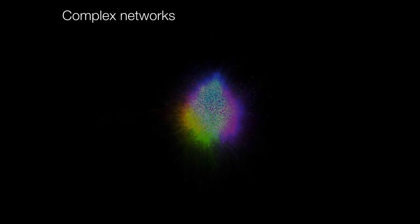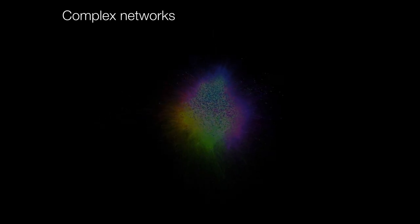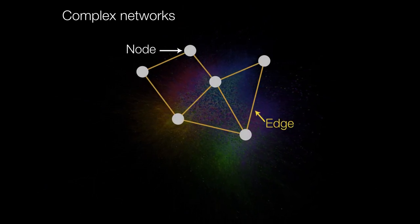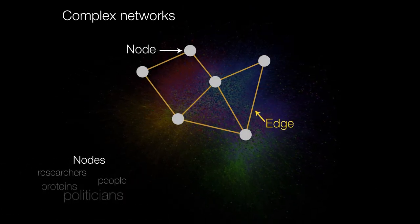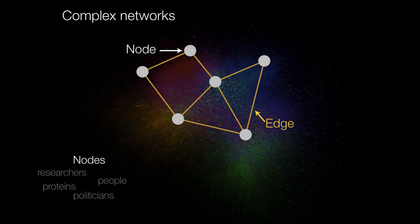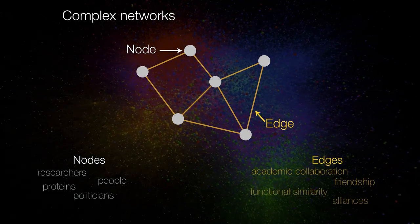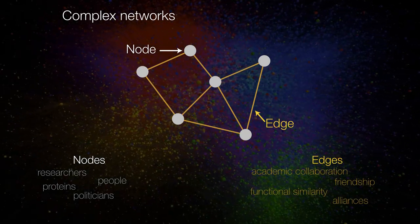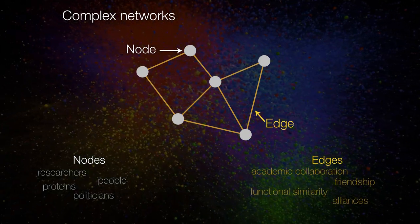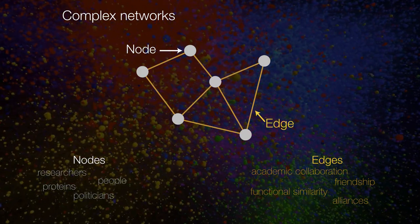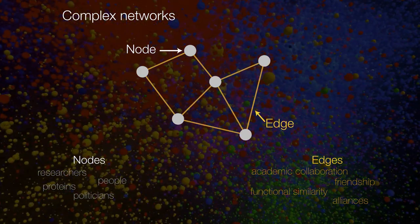So what's a complex network? It's a way to represent complex systems by using graphs, in which we have nodes that represent the elements of your system — like researchers, people, proteins, or politicians — and edges that represent their relationships, like academic collaboration, friendship, functional similarity, or alliances.